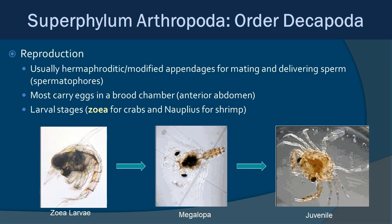Looking at reproduction in order Decapoda: decapods are generally dioecious. They have modified appendages for mating and delivering sperm through spermatophores. Most females carry eggs in a brood chamber in the anterior abdomen. The larval stage seen in the plankton is called zoea for crabs and nauplius for shrimp. The zoea metamorphoses into a megalopa, then into a juvenile crab, and grows larger through successive molting until reaching adult size.